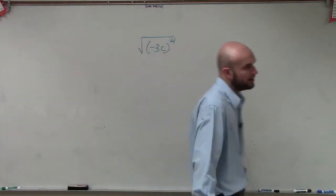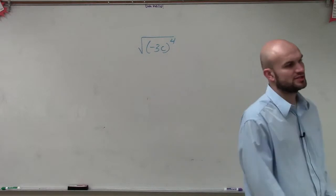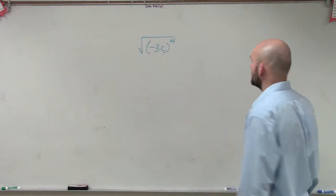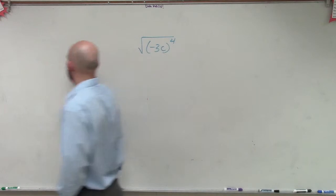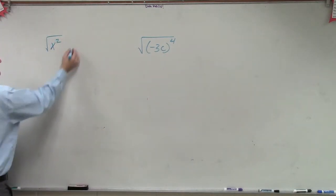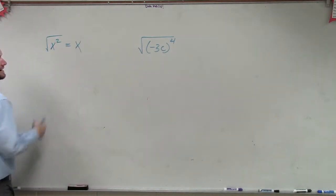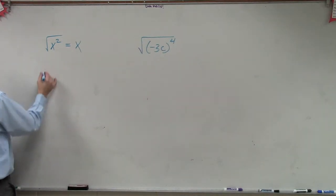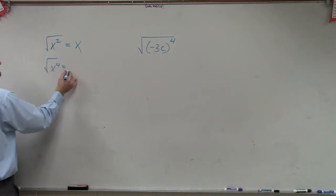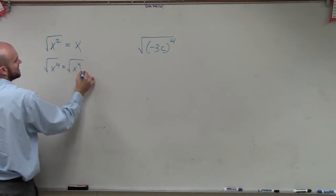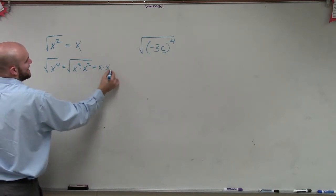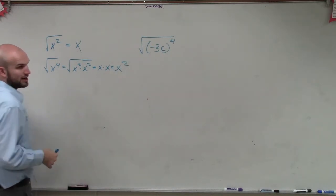Let's go back through our variables. If we're going to take the square root of a variable, we have to understand that the square root of x squared equals x. Going up the list, the square root of x to the 4th equals the square root of x squared times x squared, which equals x times x, which equals x squared.